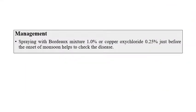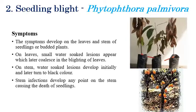For management of Black Pod disease, spray Bordeaux mixture at 1% or apply the fungicide copper oxychloride at 0.25% just before the onset of the monsoon season. Since humid conditions favor disease initiation, applying copper oxychloride at 0.25% and Bordeaux mixture at 1% before the monsoon is very important.